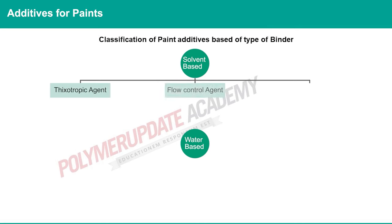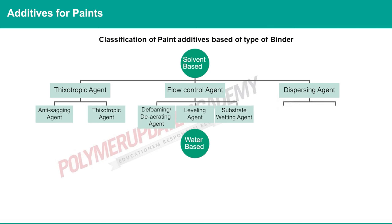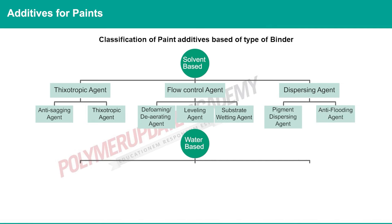For solvent-based paints, the three types of additives are: thixotropic agent, flow control agent, and dispersing agent. Thixotropic agent is further divided into anti-skinning agent and thixotropic agent. Flow control agent is further divided into de-foaming or de-aerating agent, leveling agent, or substrate wetting agent. Dispersing agent is further divided into pigment dispersing agent and anti-flooding agent.